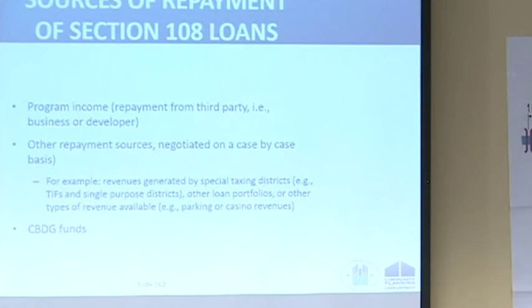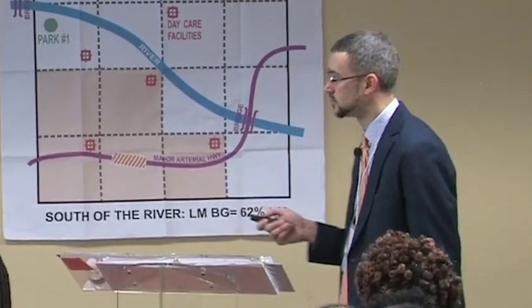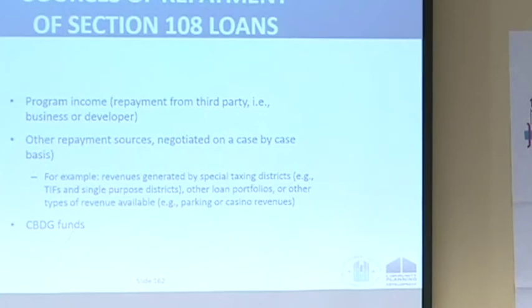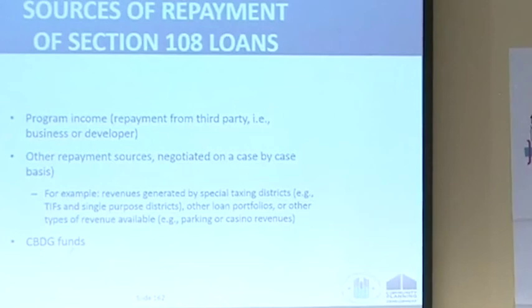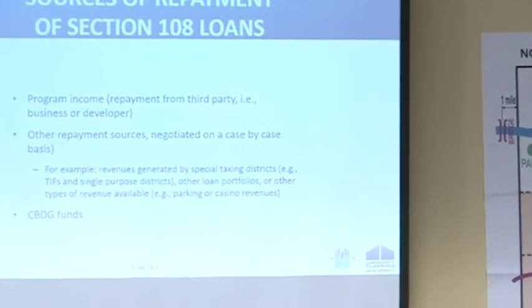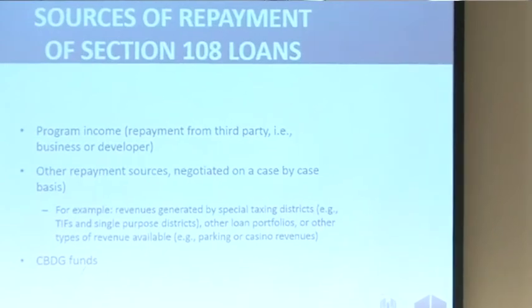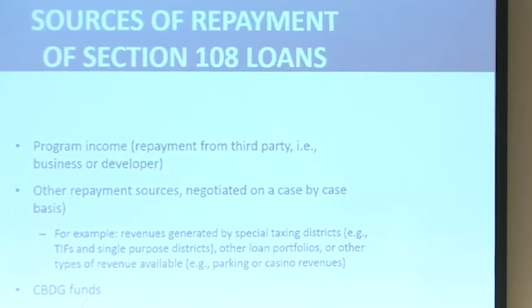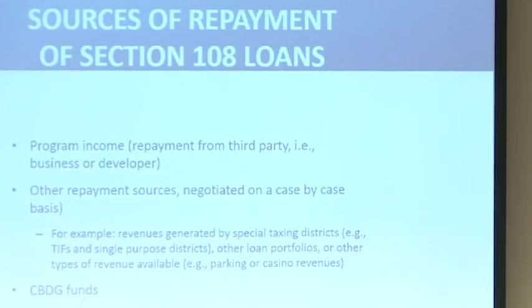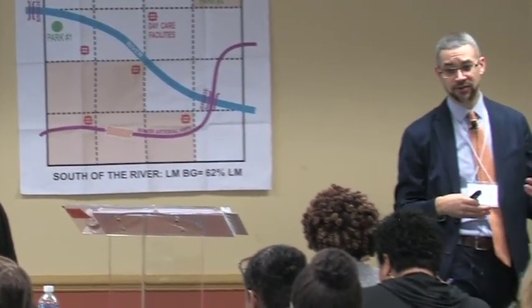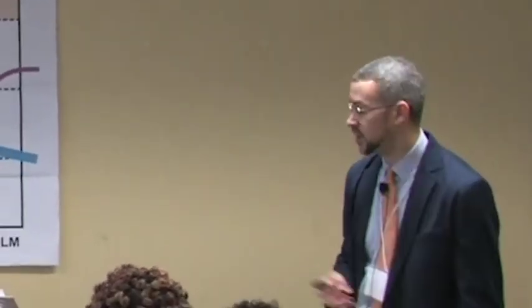The Credit Reform Act required communities to pledge collateral in addition to CDBG — HUD wants to know up front what that collateral is, such as general fund dollars or housing trust resources. Sources of repayment for Section 108 funds include program income generated by the developer repaid to you, or other repayment sources negotiated on a case-by-case basis such as Tax Increment Financing district revenues. Communities also have forms of additional security: assets created from the Section 108 use, portfolio income, the full faith and credit pledge of CDBG dollars, and any debt service reserves or other local revenue streams such as parking revenues.